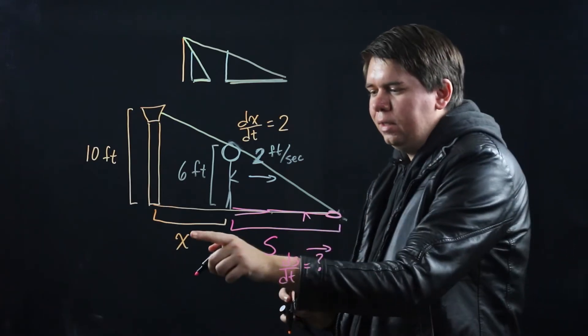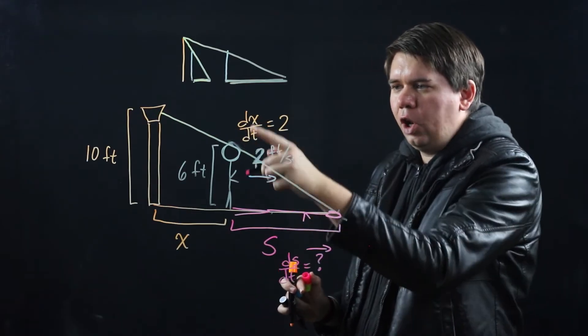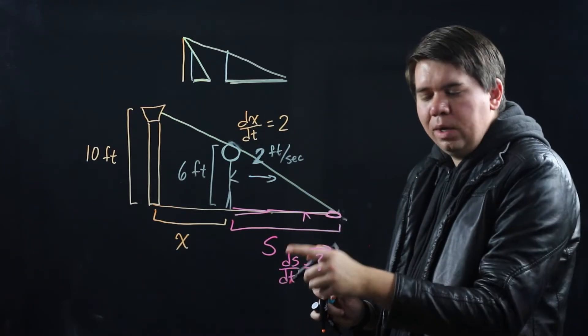Great. We have two quantities, x and s. We have one rate of change we know about, the change of x over time. And there's another rate of change we want to know about, the change in s over time.